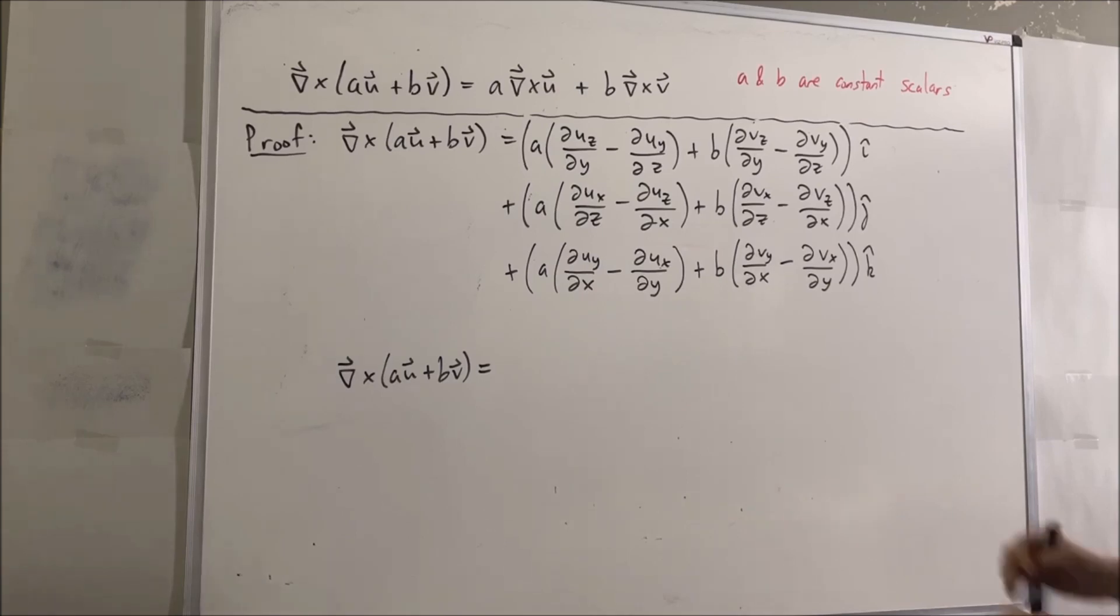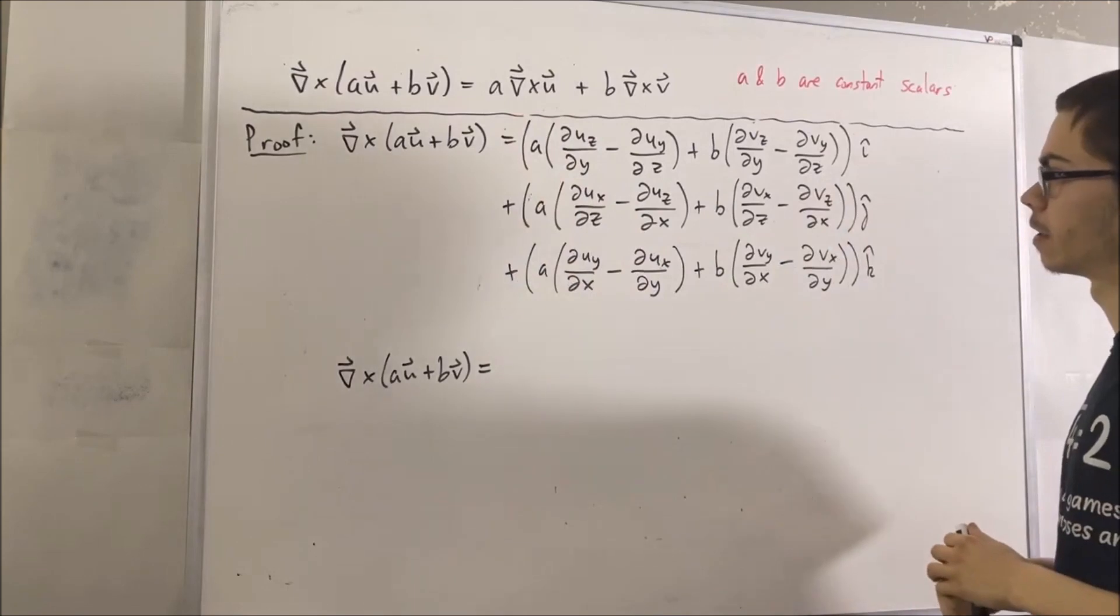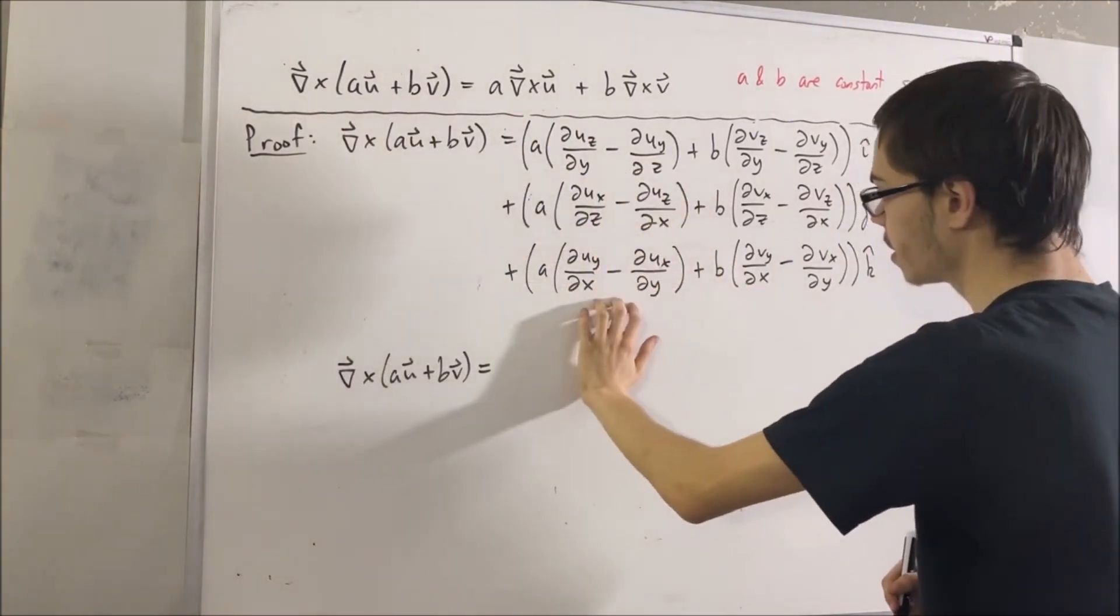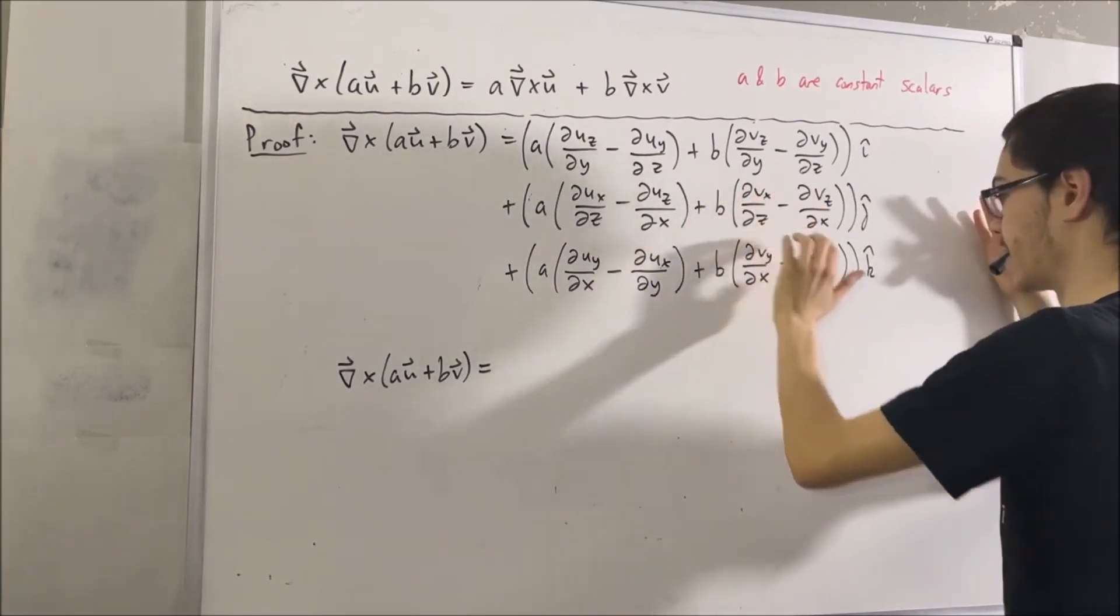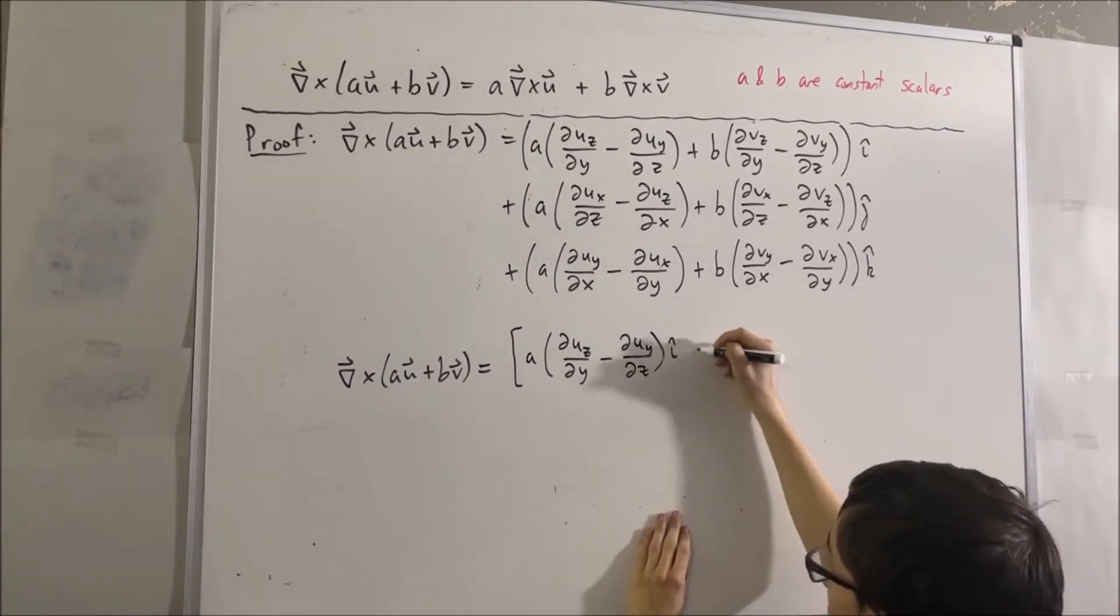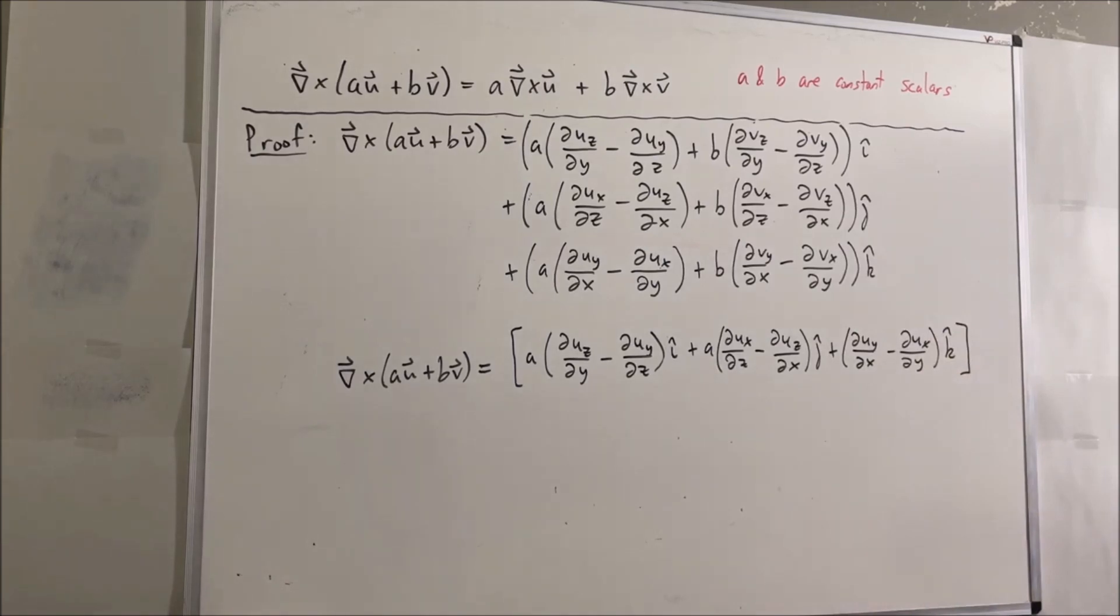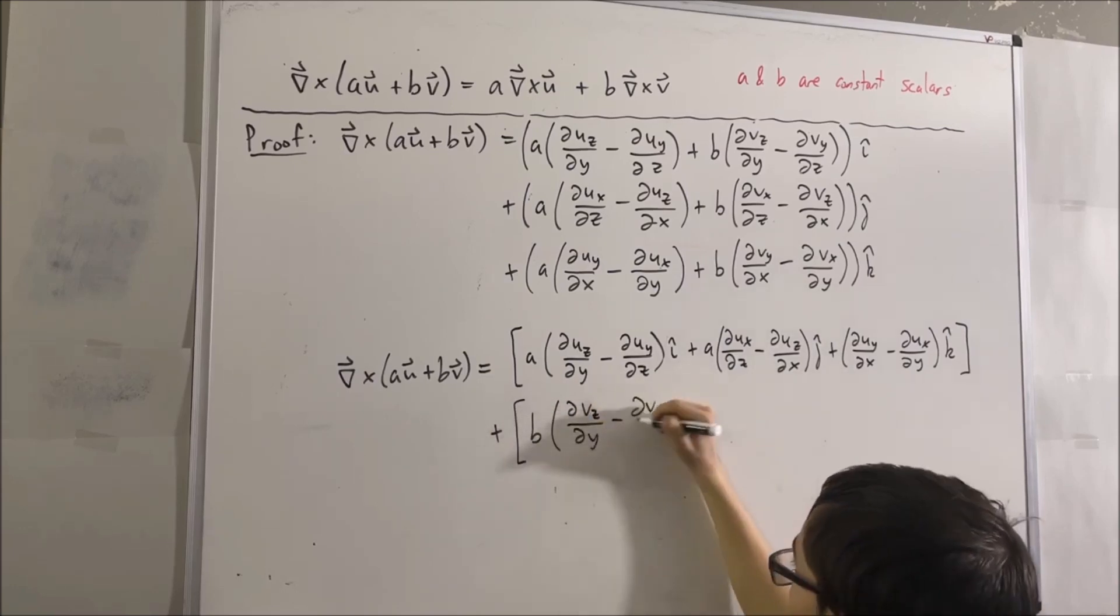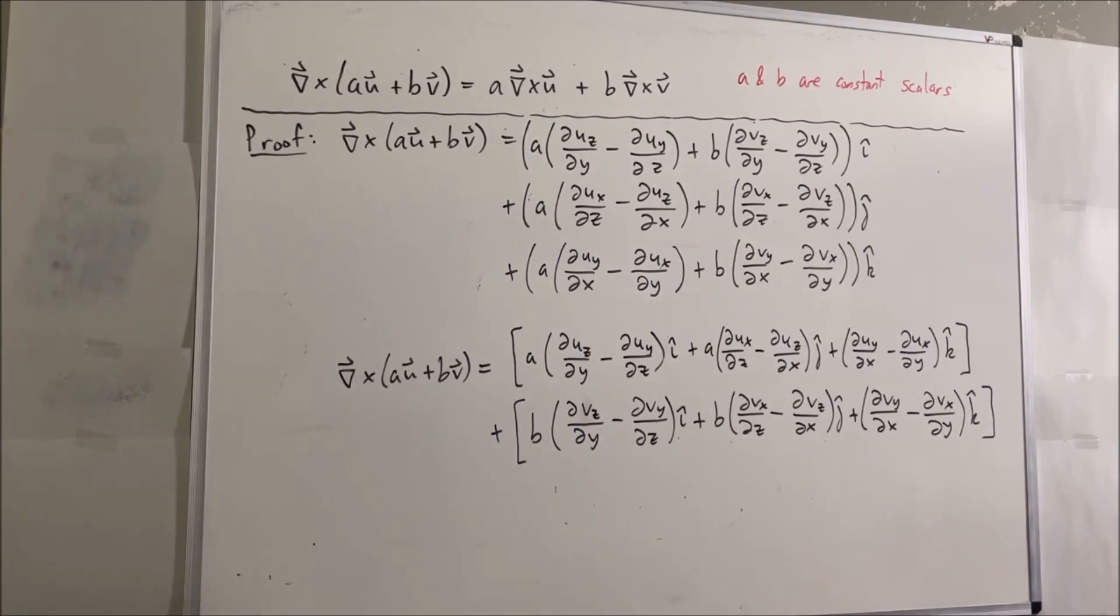So, now I'm going to write this vector as a sum of two vectors. The first vector will contain these components. The vector added to that one will contain these components. So, that's our first vector, and our second vector will be... And so, this would be the two vectors that we're adding together.